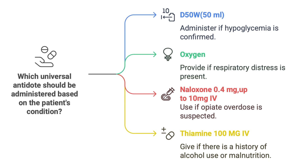Once we identify the cause of altered LOC, the first thing we do is address any immediate life-threatening issues — making sure the patient has a clear airway and is breathing adequately. Then we focus on treating the underlying cause: if it's a drug overdose, we give an antidote; if it's an infection, we start antibiotics; if it's a structural problem like a brain bleed, surgery might be necessary.